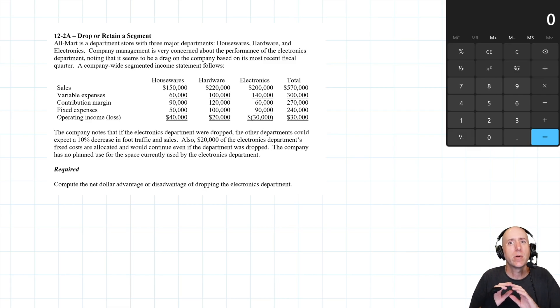When should we drop the segment? When should we drop the product line? When to stop something that's already going? Relevant costs can help us make those types of decisions.